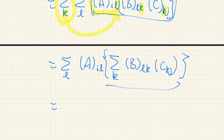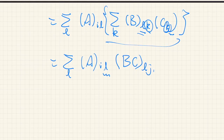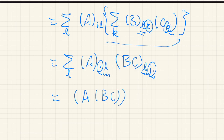This inner sum — over K of B_{LK} times C_{KJ} — with indices L and J — is the LJ element of matrix BC.